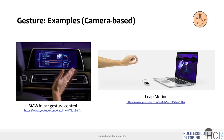For gesture interaction, a notable example is the BMW car infotainment system, where you can control it by waving your hand in front of it — detected by a camera. There's also the Leap Motion controller, now commonly used in virtual reality for hand tracking, also camera-based.